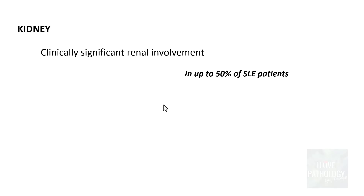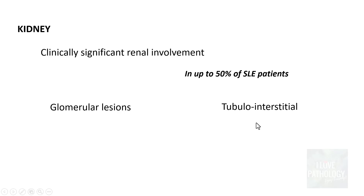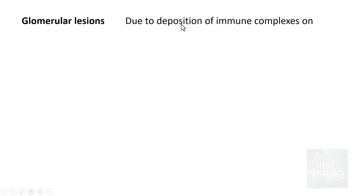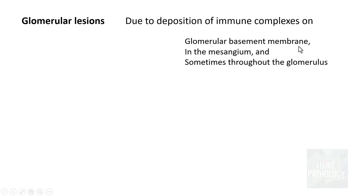Moving on to the morphological features of the kidney: clinically significant renal involvement happens in 50% of patients with SLE. The lesions can be categorized into glomerular lesions — referred to as glomerulonephritis — and tubulo-interstitial lesions, referred to as tubulo-interstitial nephritis. Glomerular lesions arise from deposition of immune complexes in the glomerular basement membrane, in the mesangium, and sometimes throughout the glomerulus. These glomerular lesions are referred to as lupus nephritis.